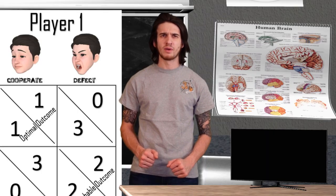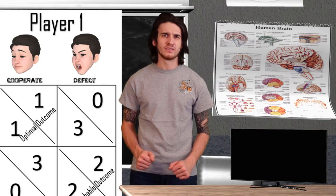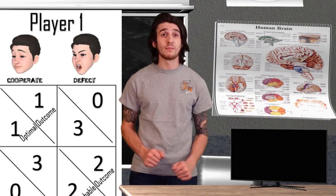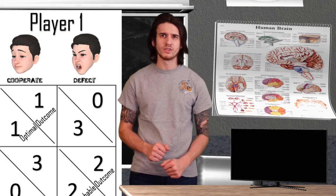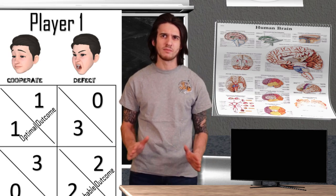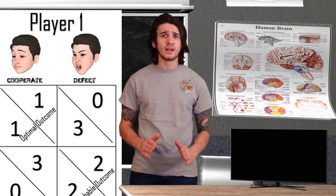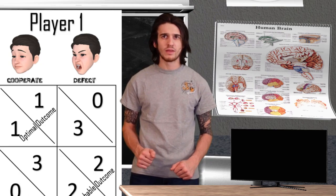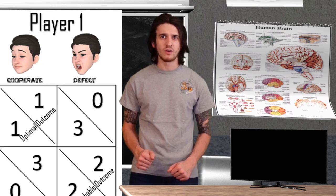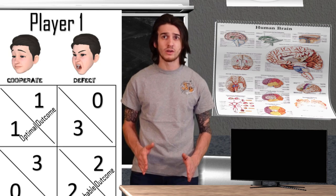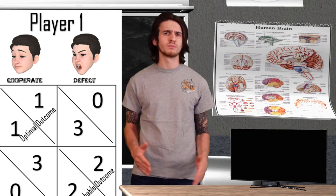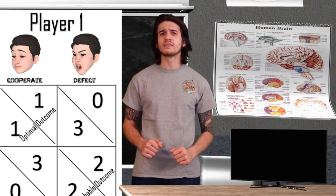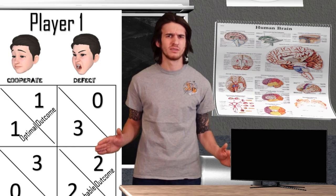On top of the prisoner's dilemma helping us explain social traps, its core premise was also turned into an excellent game show known as Friend or Foe, which aired in 2002. The show basically had two people decide whether they were going to share winnings with each other or attempt to steal all the winnings for themselves. As you can imagine, this led to some pretty funny moments on TV.